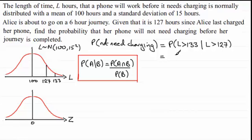And if you compare this with this result here, you'll see that we need both events to occur. And for both of these two events to be satisfied, L must be more than 133, because if it's more than 133 it will be more than 127. So we got probability L is greater than 133 hours, and we compare this with, or divide it with, the probability of the given event, which is the probability that L is greater than 127.